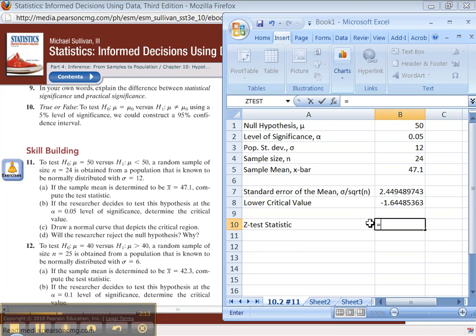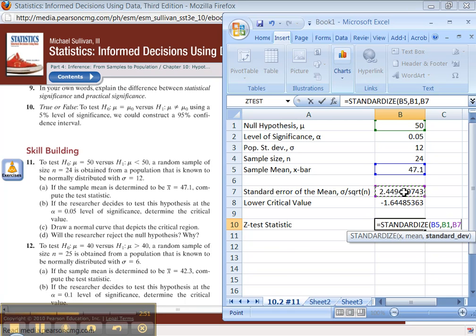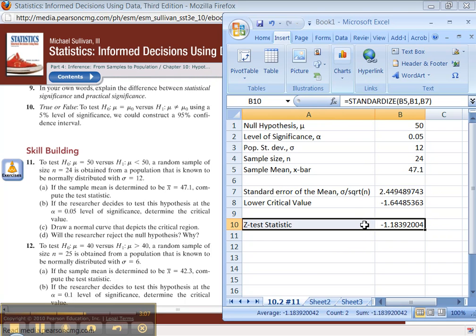The z-test statistic, we need to standardize. You can use the standardize function, or you could use the formula which is available in section 3.4. It says x, but what we need is x-bar, which is 47.1. The mean, you assume the mean to be 50, the null hypothesis, unless you prove it otherwise. Standard deviation, well, we're not going to use standard deviation because we're talking about a sample. We're going to use the standard error. So it's slightly different in practice than it was back in section 3.4. The first number is your x-bar, the middle number is your mean from the null hypothesis, the last one is your standard error. That's the test statistic right there.